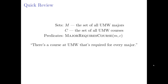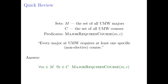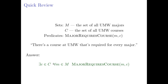What if I say: "There is a course at UMW required for every major"—every student must take it no matter what they major in, like a freshman seminar? How do you express that? It's exactly the same predicates but the order of quantifiers is reversed: there exists a C such that for all M, majorRequiresCourse(M, C). Before we said for all M there exists a C—now we say there exists a C for which for all M, M requires it. Reversing the quantifier order gives a very different, much stronger meaning.